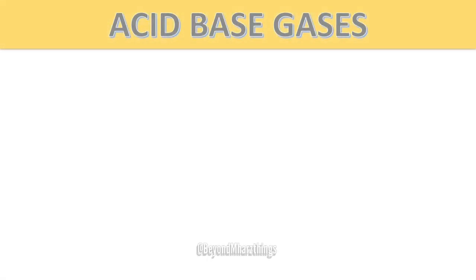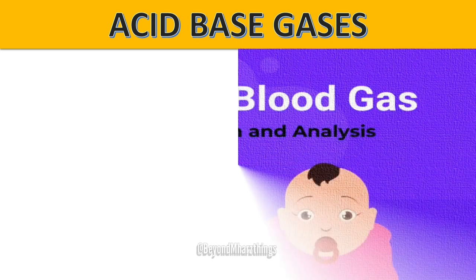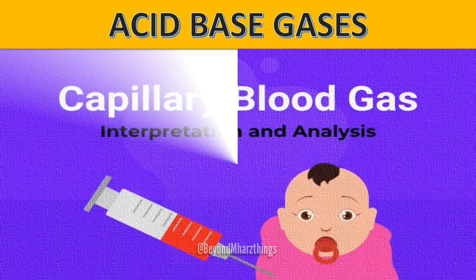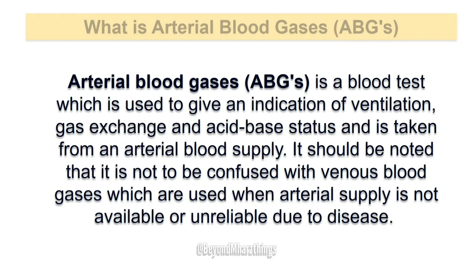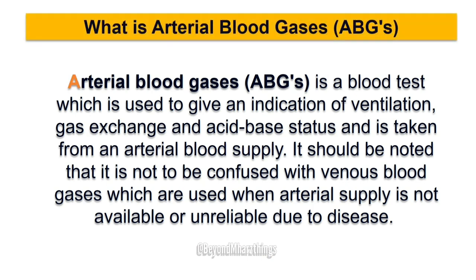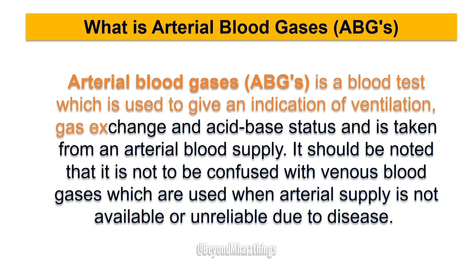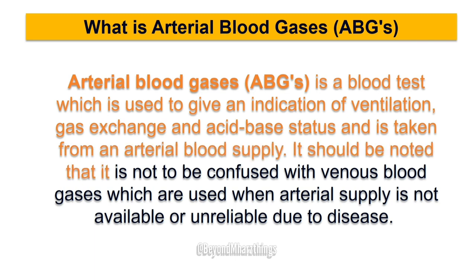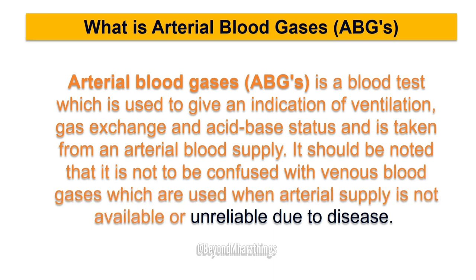Arterial Blood Gases (ABGs) is a blood test which is used to give an indication of ventilation, gas exchange, and acid-base status, and is taken from an arterial blood supply. It should be noted that it is not to be confused with venous blood gases, which are used when arterial supply is not available or unreliable due to disease.